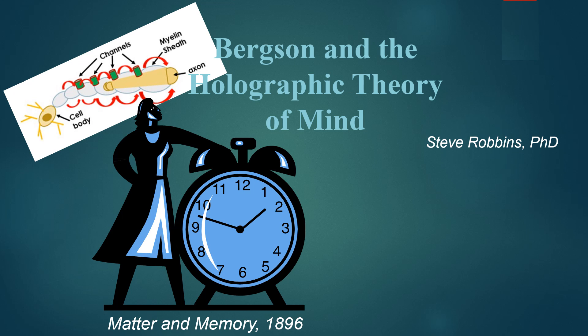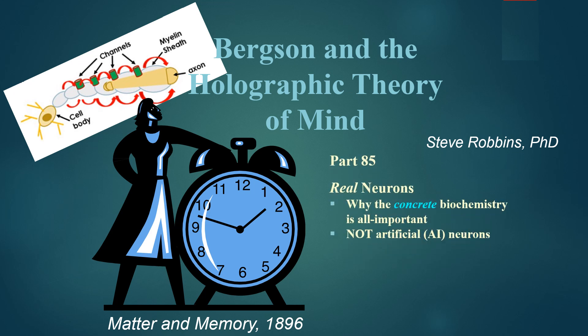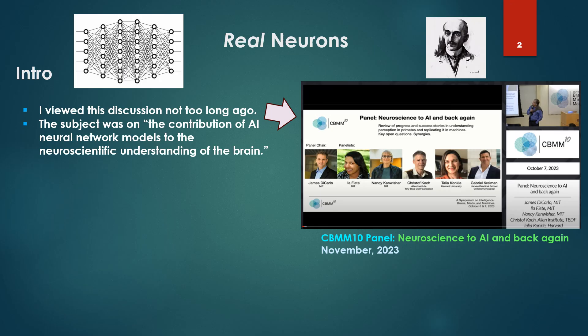Bergson and the holographic theory — continuing today we'll talk about real neurons, which is to say why the concrete biochemistry of the neuron is all-important: concrete biochemistry, not artificial AI neurons. I viewed this discussion not too long ago — a neuroscience panel, CBMM 10, back again — on the contribution of AI neural network models to the neuroscientific understanding of the brain.